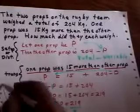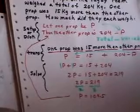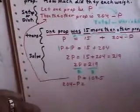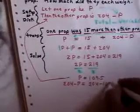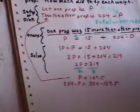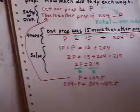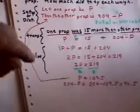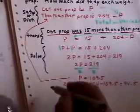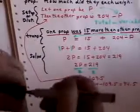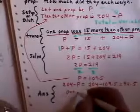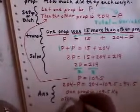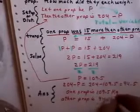So 2P equals 219. I'm now going to divide both sides by 2, and P is 109.5. Now I immediately go back up to the setup. The other one is 204 minus P, so that's 204 minus 109.5. My calculator tells me that is 94.5. One prop is 109.5 kilograms, the other prop is 94.5 kilograms.